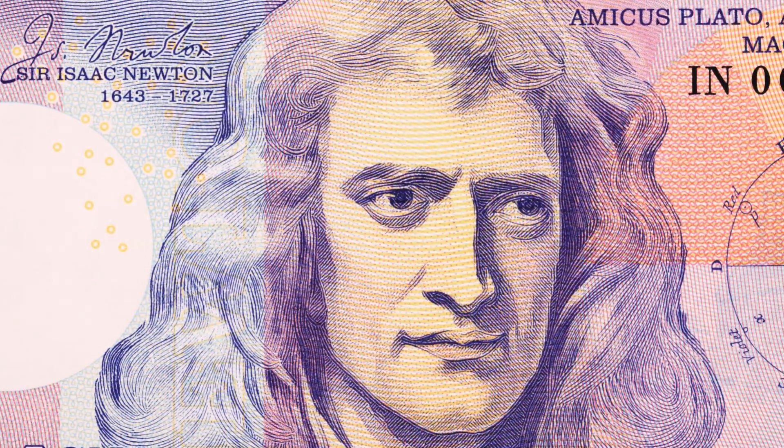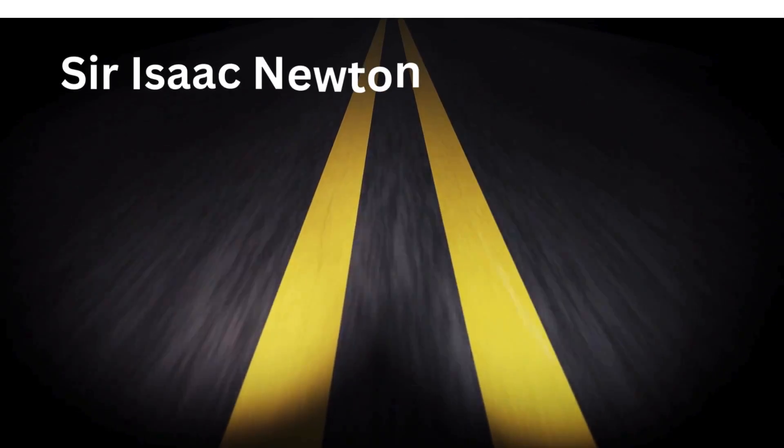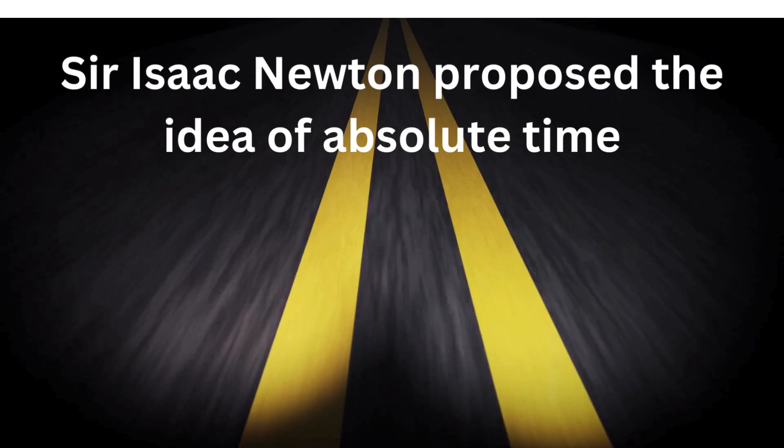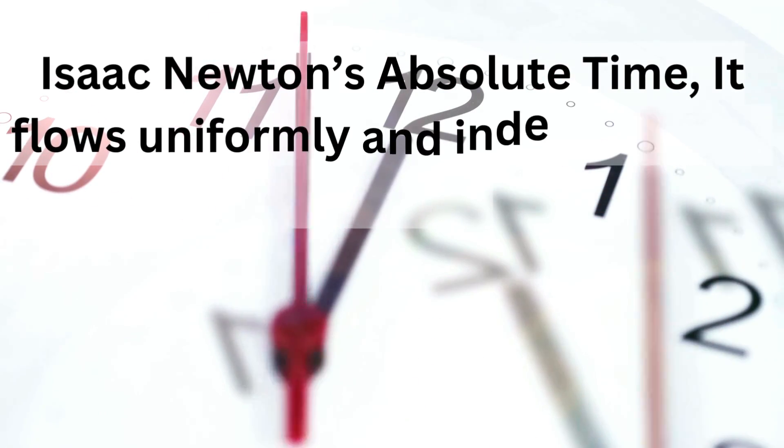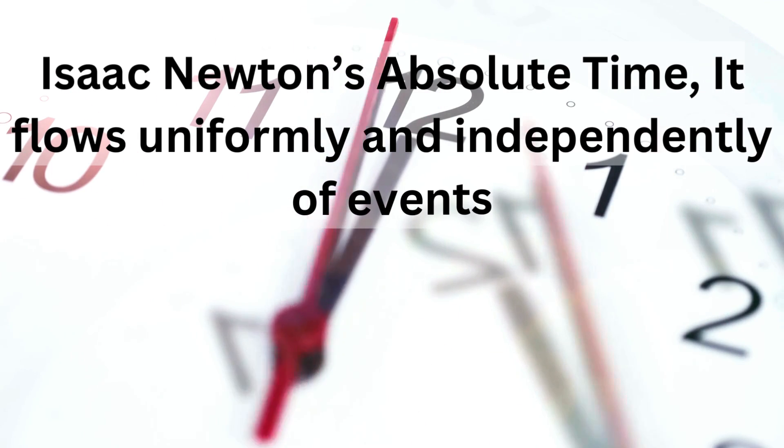Isaac Newton's absolute time. In the 17th century, Sir Isaac Newton proposed the idea of absolute time. Time that flows uniformly and independently of events. He envisioned it as a constant backdrop against which events occur. In this view, time is like a straight unchanging line that continues regardless of the universe's happenings.